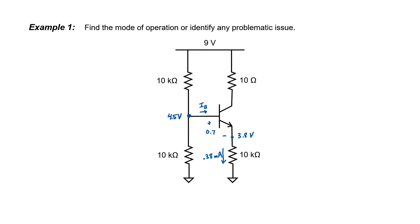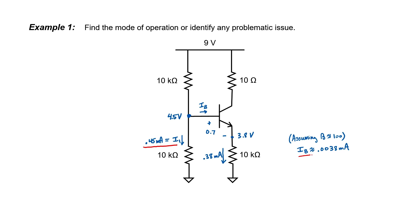Now let's go back and see if my assumption of neglecting the base current was realistic or not. We can assume that beta is some number that's 100 or so. This means that my base current is going to be on the order of a hundredth of my emitter current. The question is whether or not this base current might have influenced my calculation of the base voltage. To tell whether that's true, we need to find this current — I'll call it I1. Using Ohm's law, 4.5 divided by 10, it works out to be 0.45 milliamps.